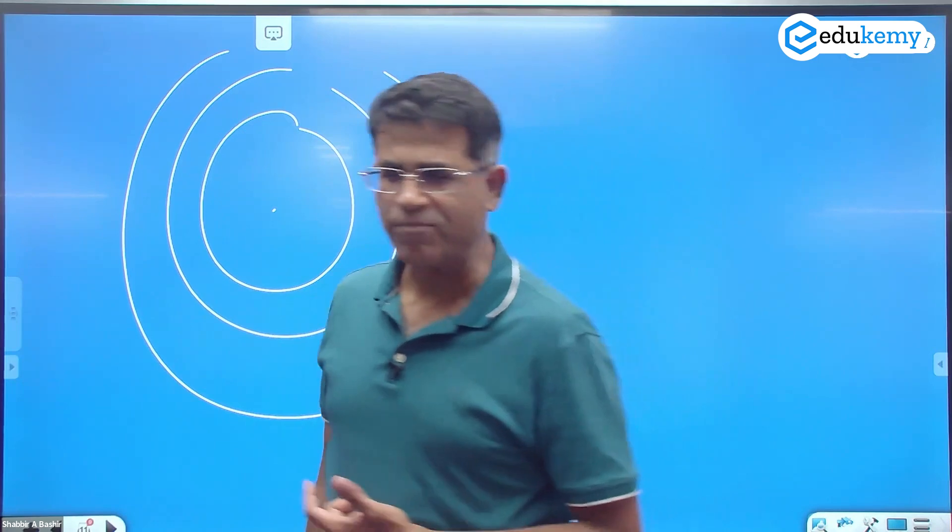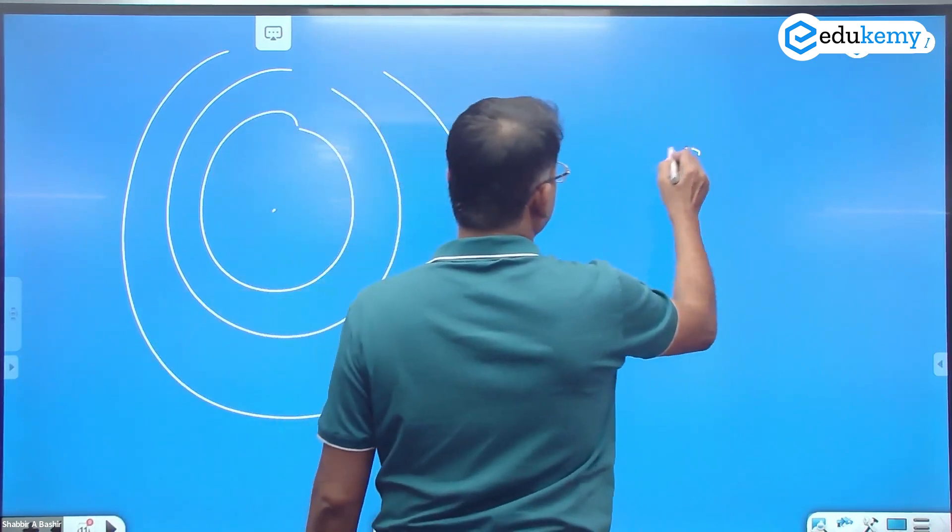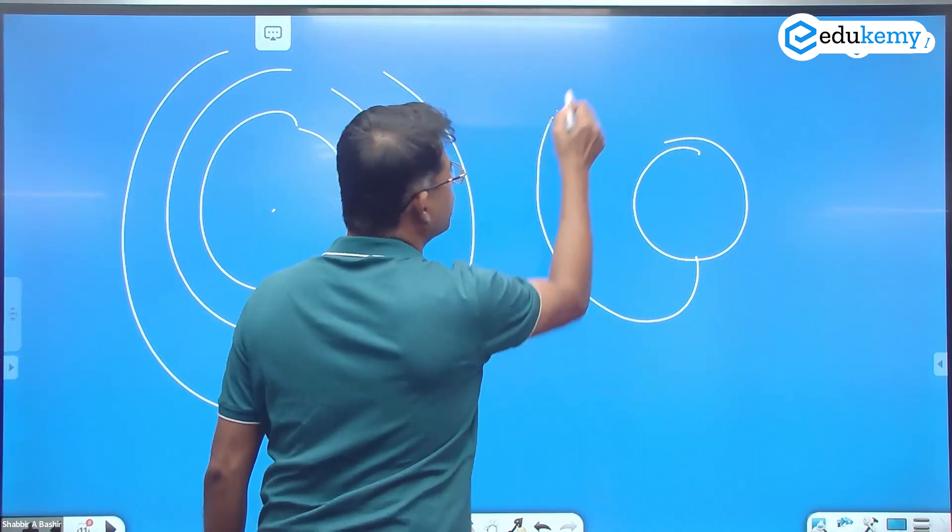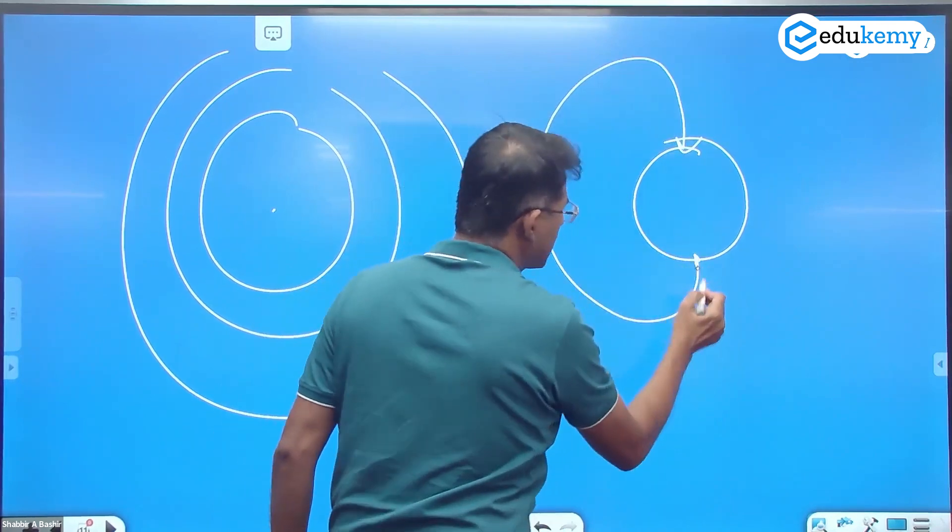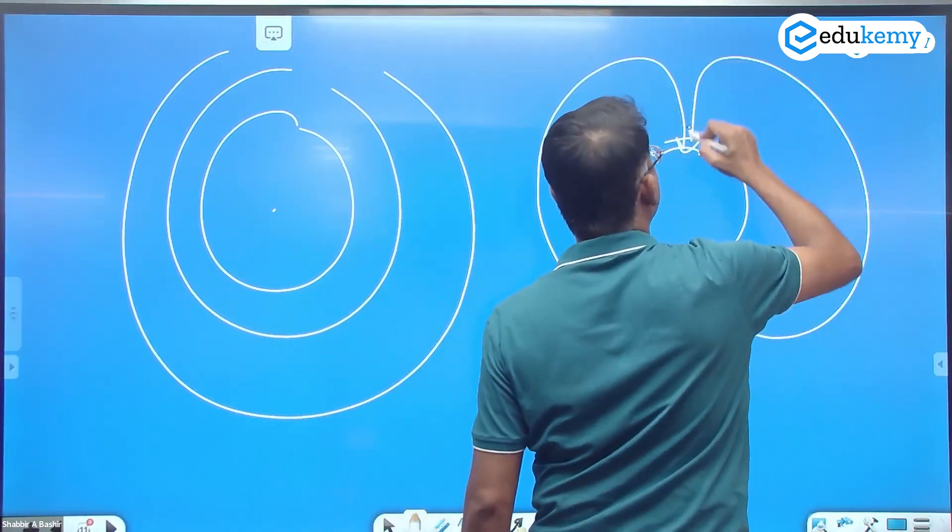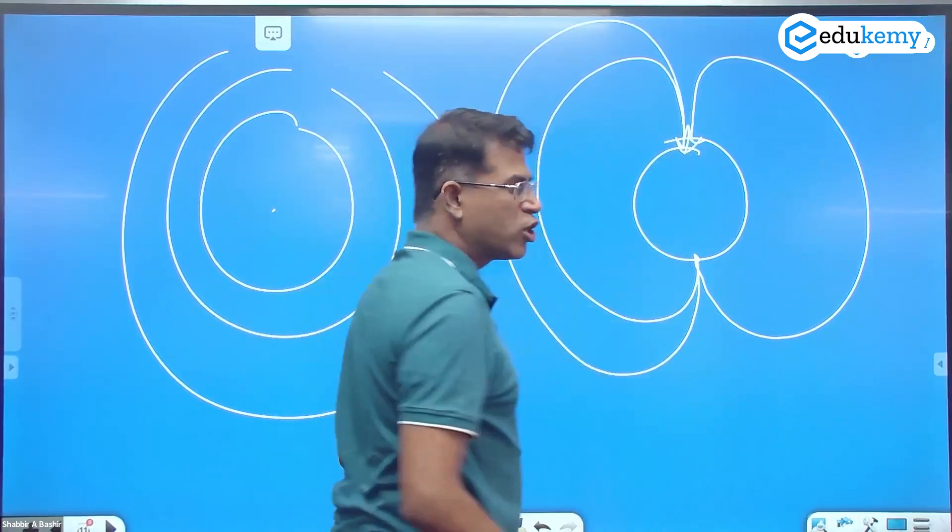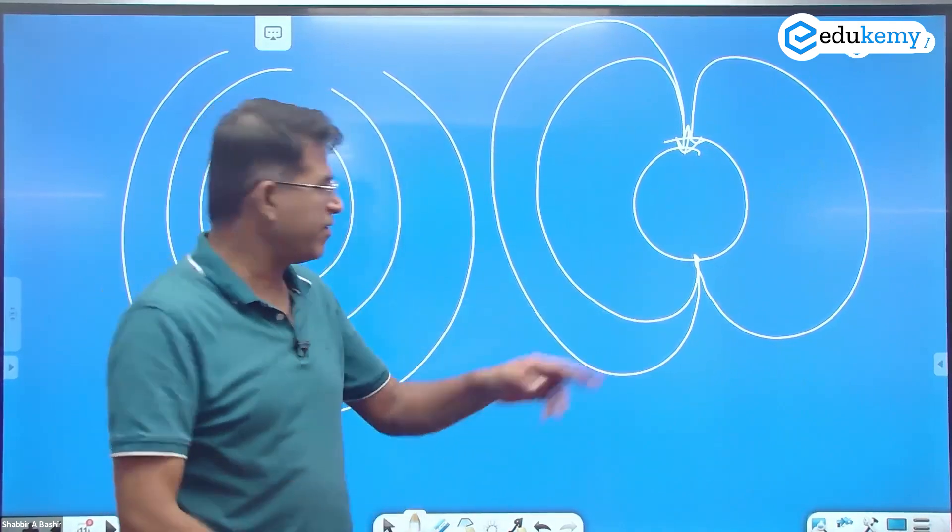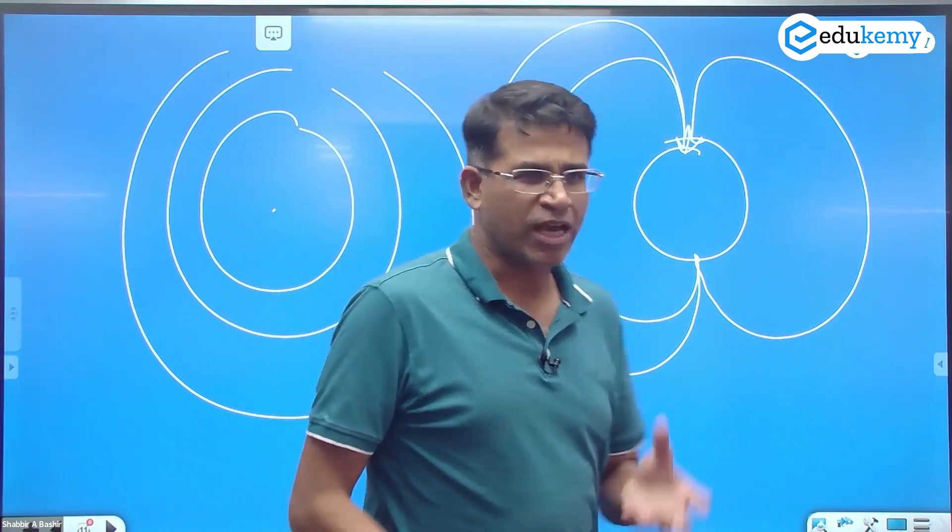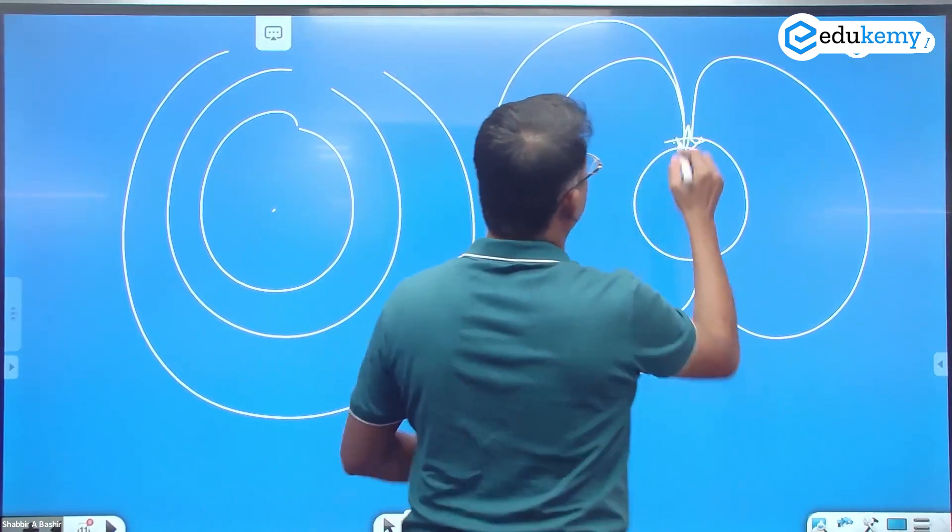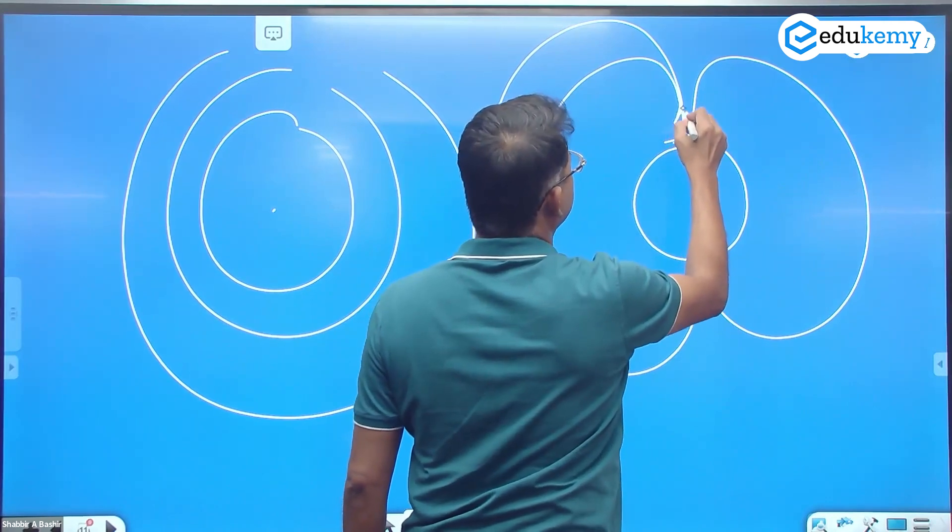Aisa nahi hai. What we have is, agar earth hai, line starts from here, it moves and comes here. It starts from here, it moves and comes here. Again from here it comes and ends here. So you'll find the lines converge, converge at the poles. So if you align at the pole, you'll find the needle is like this.